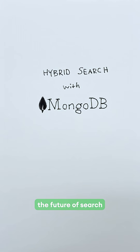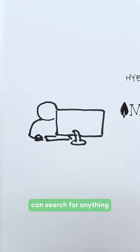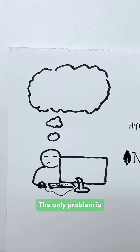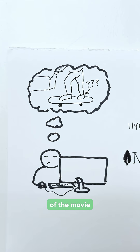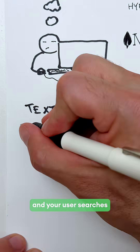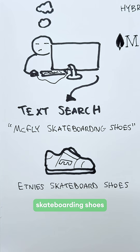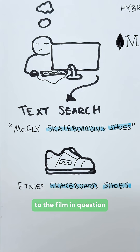Let's talk about the future of search. Imagine you've developed a new app where a user can search for anything they've seen in movies. The only problem is they're looking for shoes but they can't remember the name of the movie, only a character in it. So far you've only implemented text search and your user searches 'McFly skateboarding shoes.' The app returns skateboarding shoes but not related to the film in question.